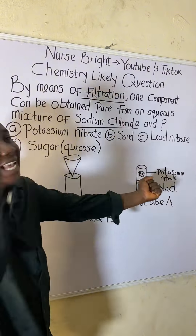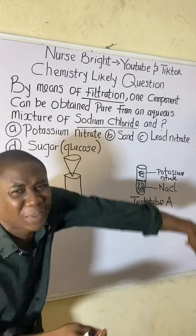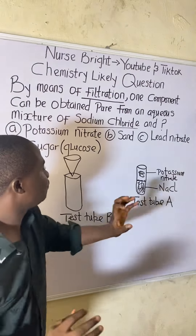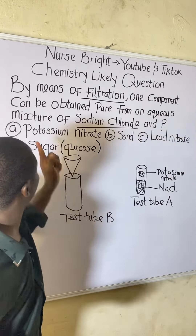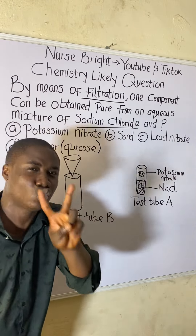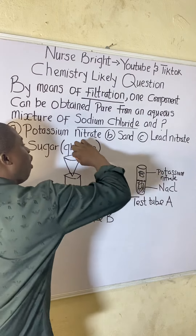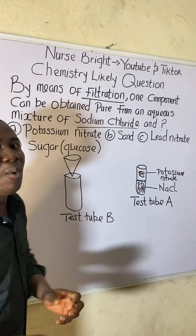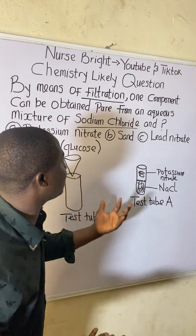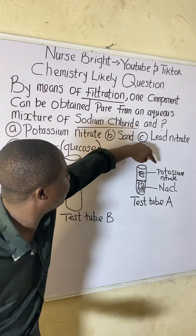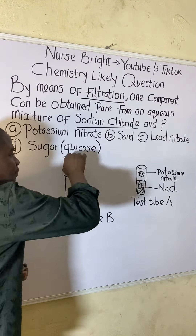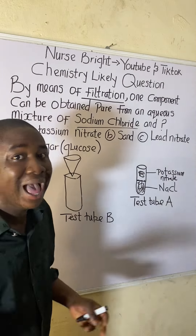Analyzing option A: potassium nitrate mixed with sodium chloride. When we pour this mixture into test tube B through the filter paper, potassium nitrate is a soluble compound — it will dissolve. Most nitrate compounds are soluble in water. So both potassium nitrate and sodium chloride will dissolve and pass through together.